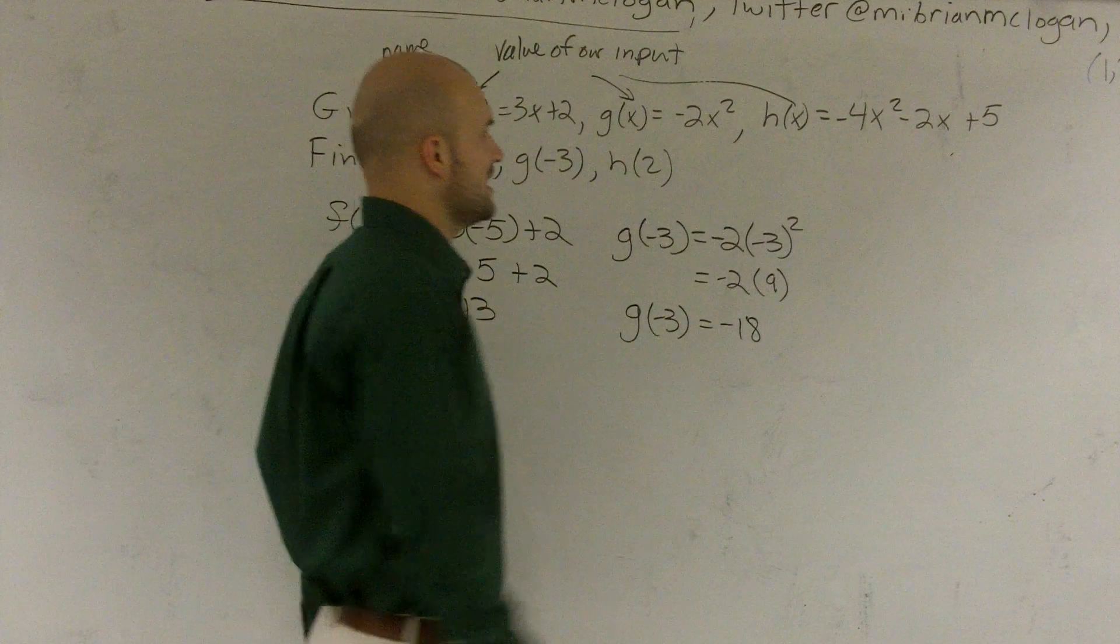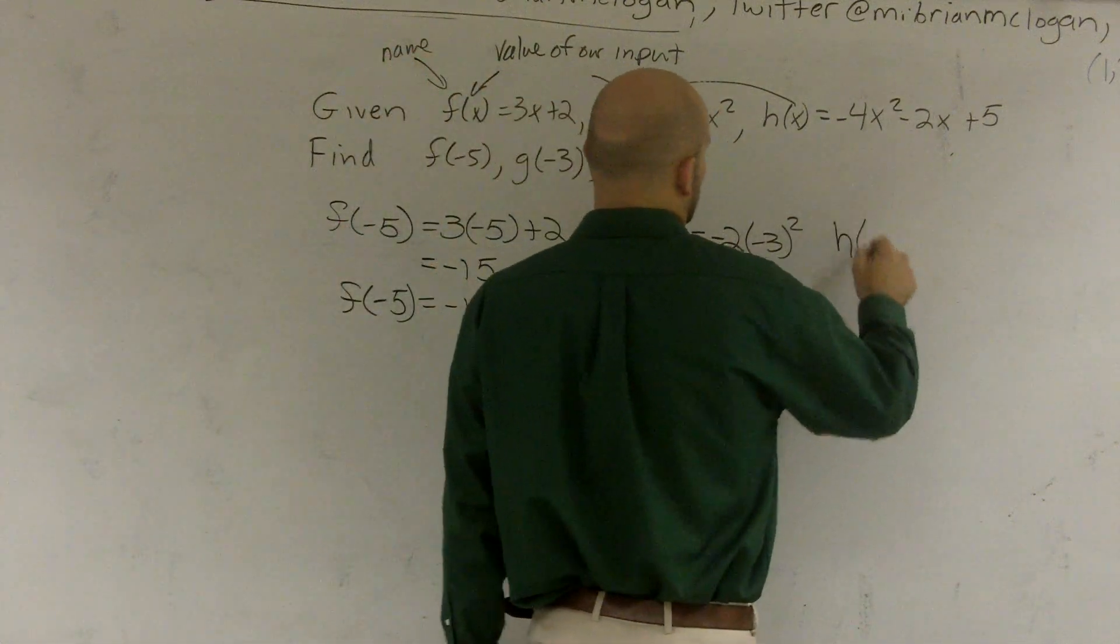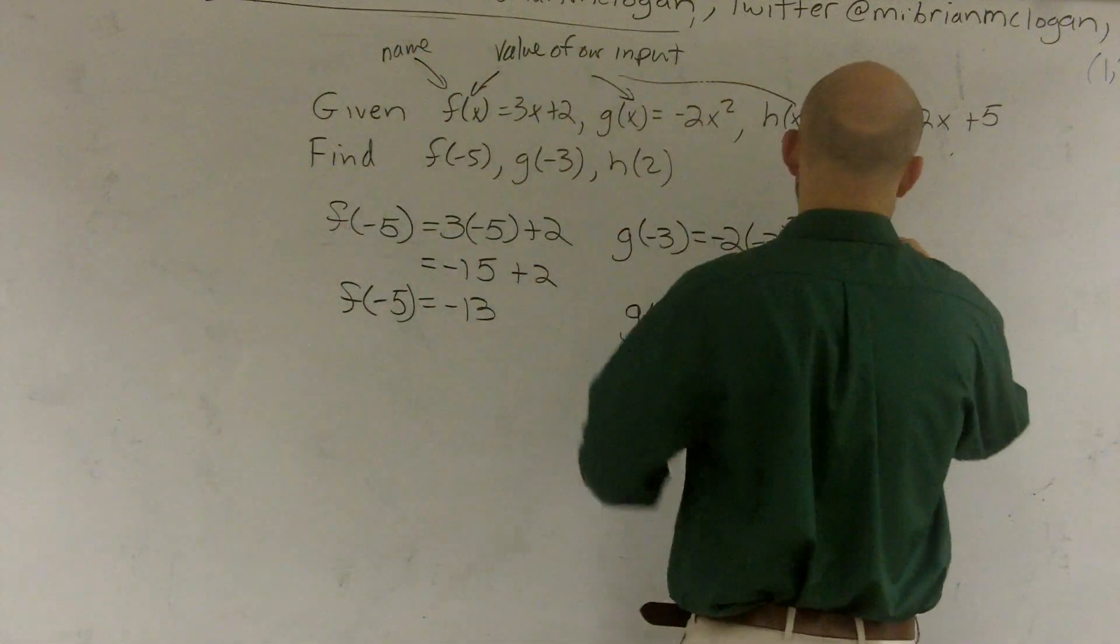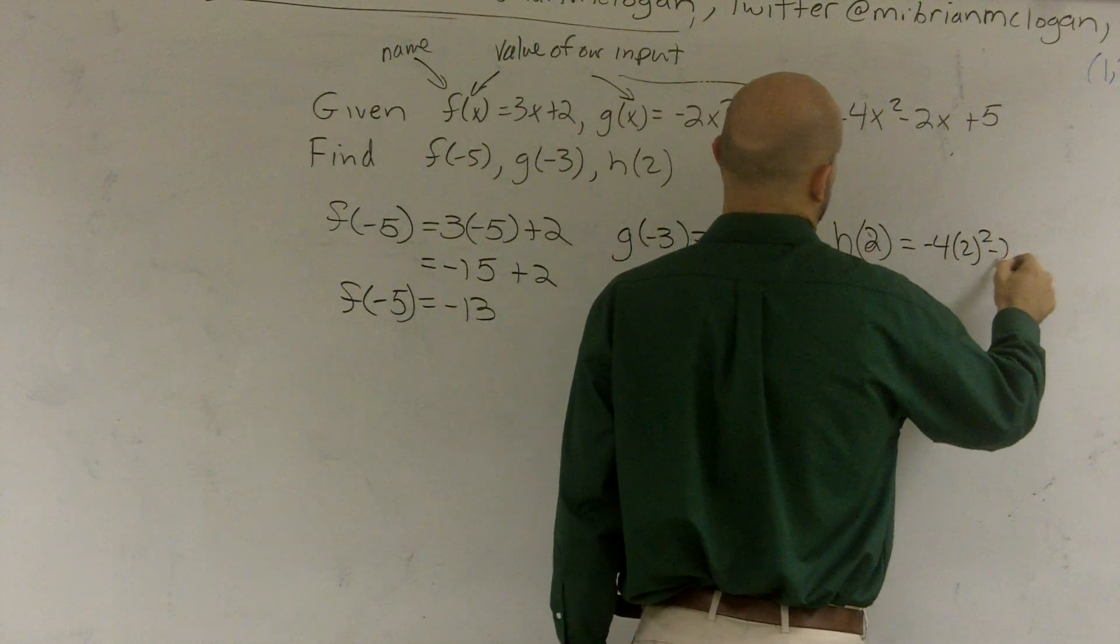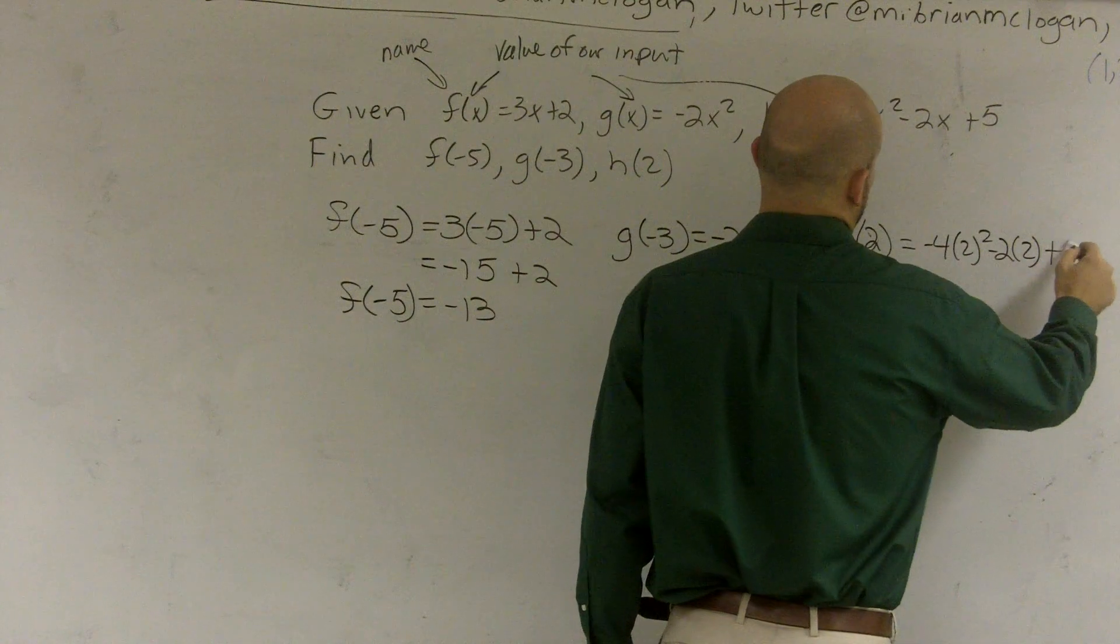And then finally, the last problem, I have h, which is h of 2, they want me to figure out, equals negative 4 times 2 squared minus 2 times 2 plus 5.